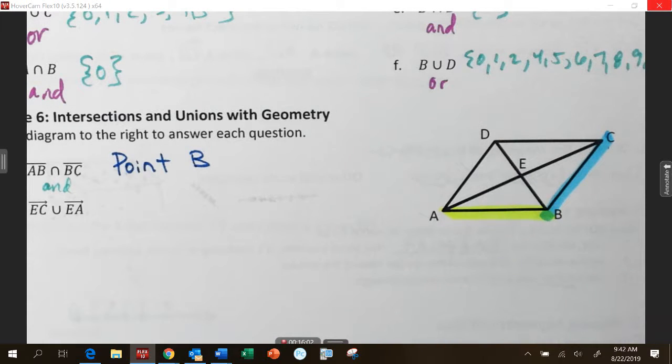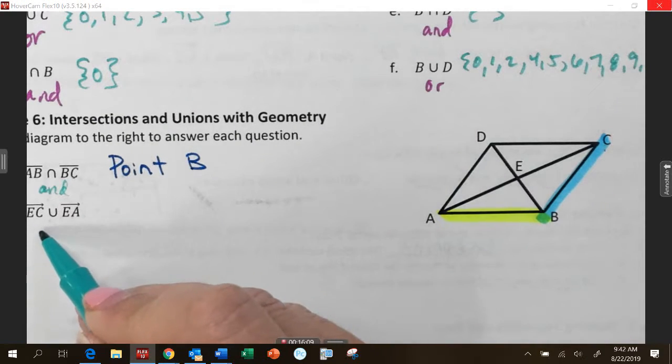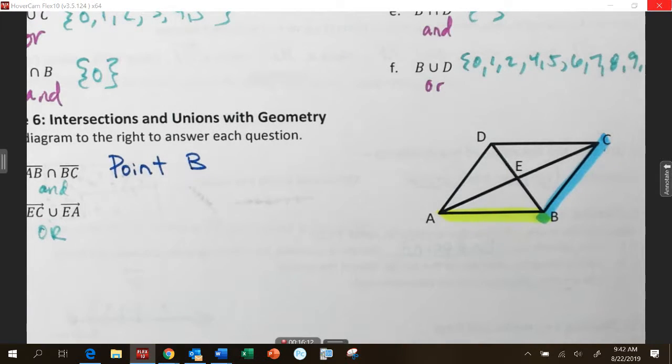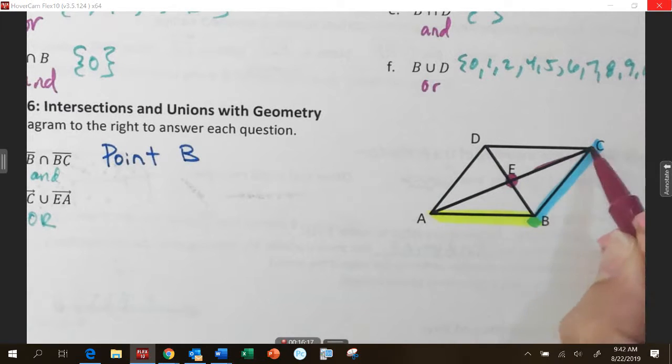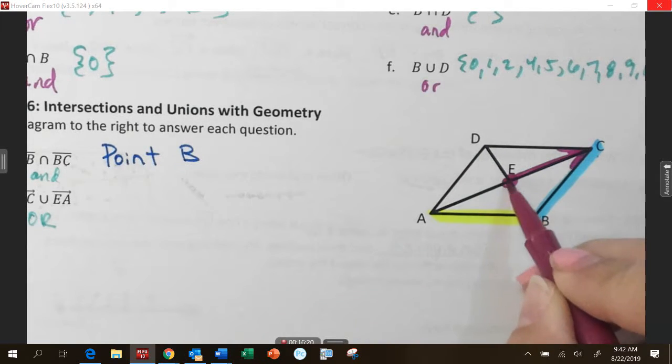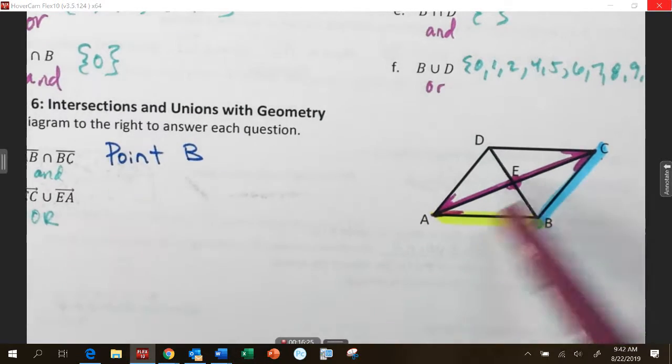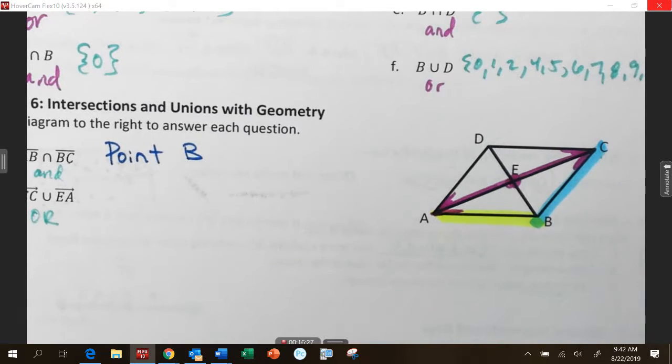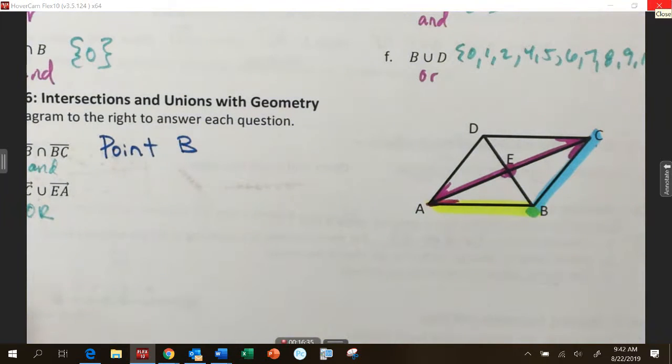And then we have EC union EA. So, union means we're coming together. We're uniting. Or. So, what I need to do is I need to come over here and I need to look at EC and EA. Rays EC and ray EA. So, if you look, I did that in the same color because it's all becoming one. What figure did I just make in my pinkish purple color that we'll turn back on in a second? A line. I made a line. I did. I made a line. So, we need to name that line.